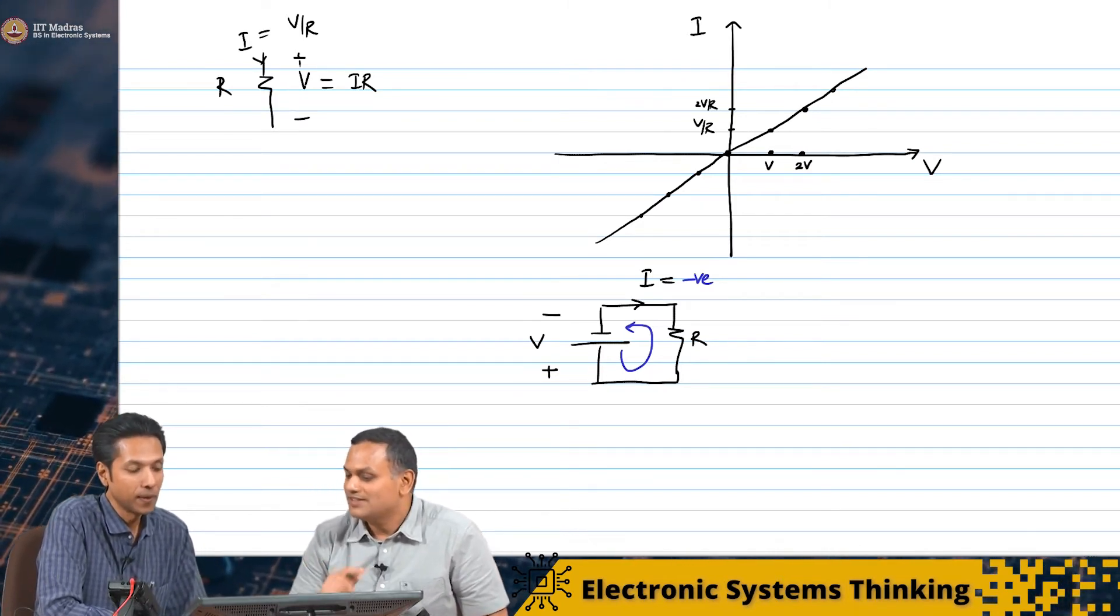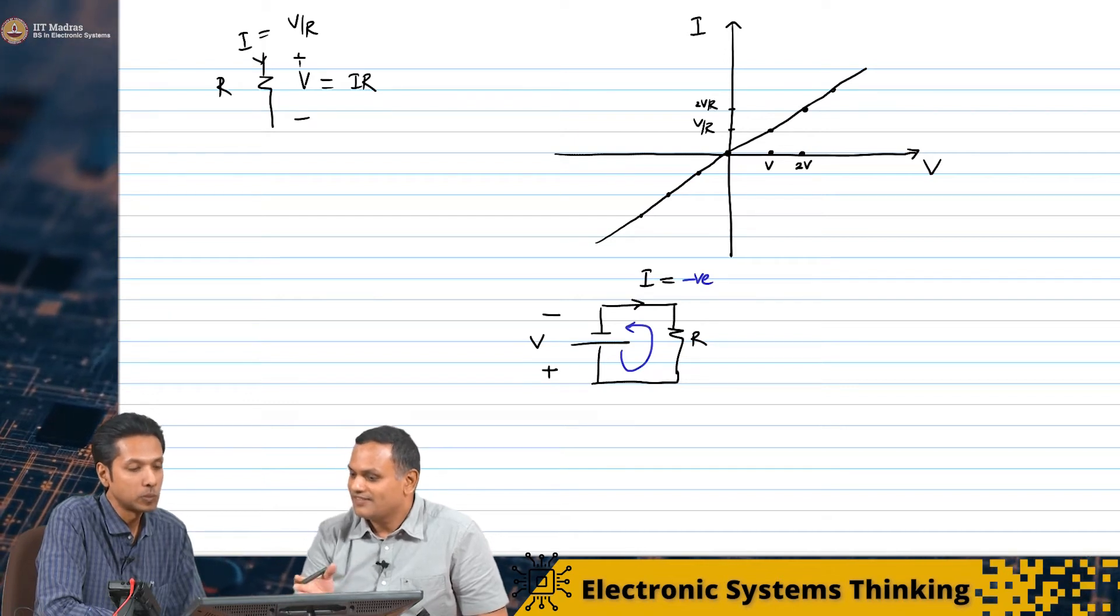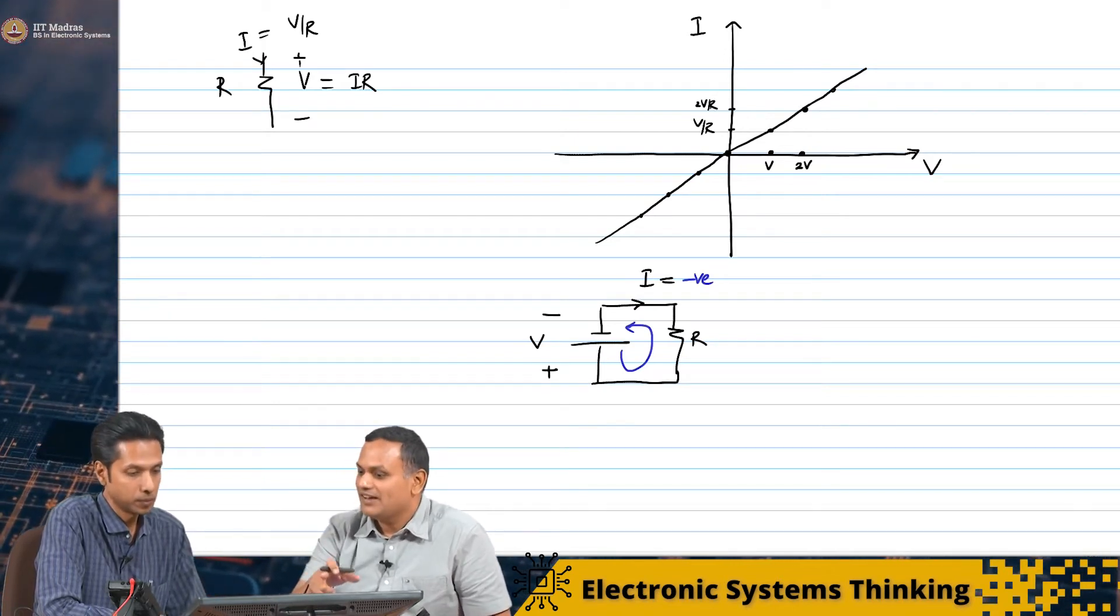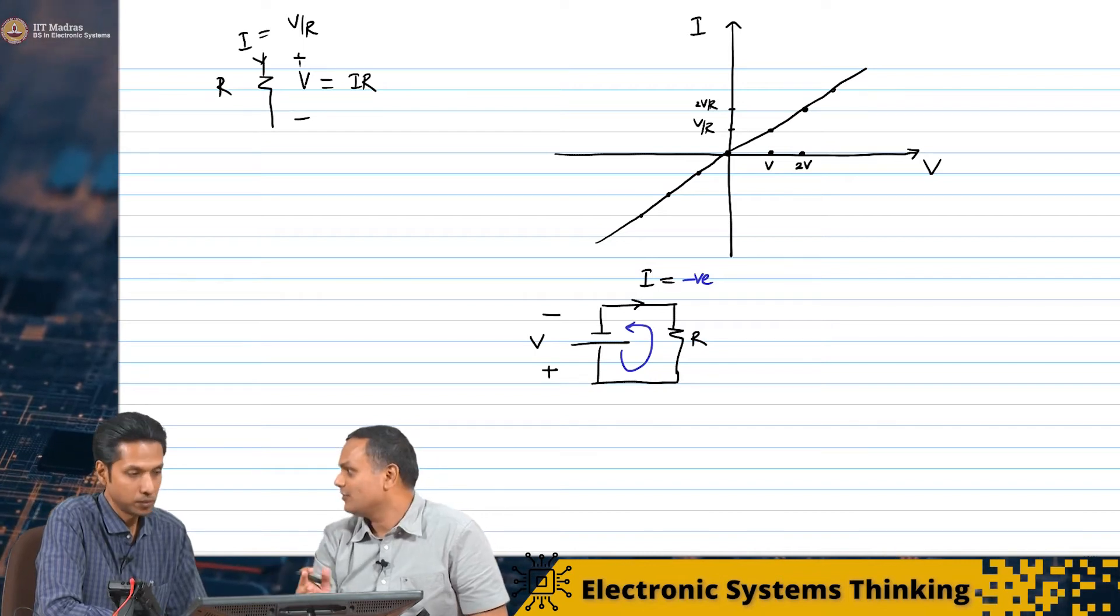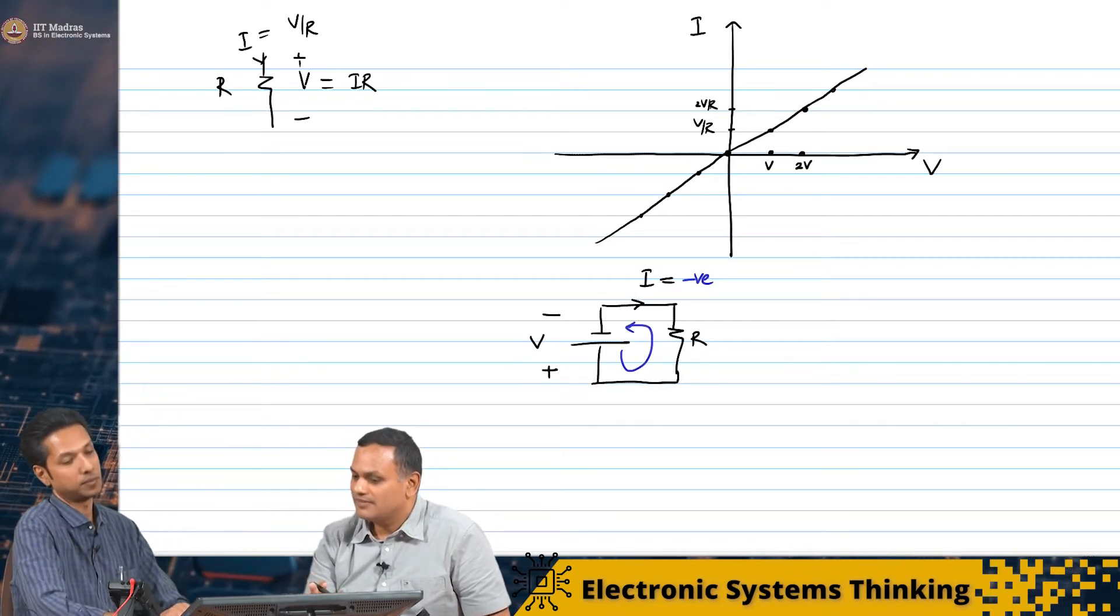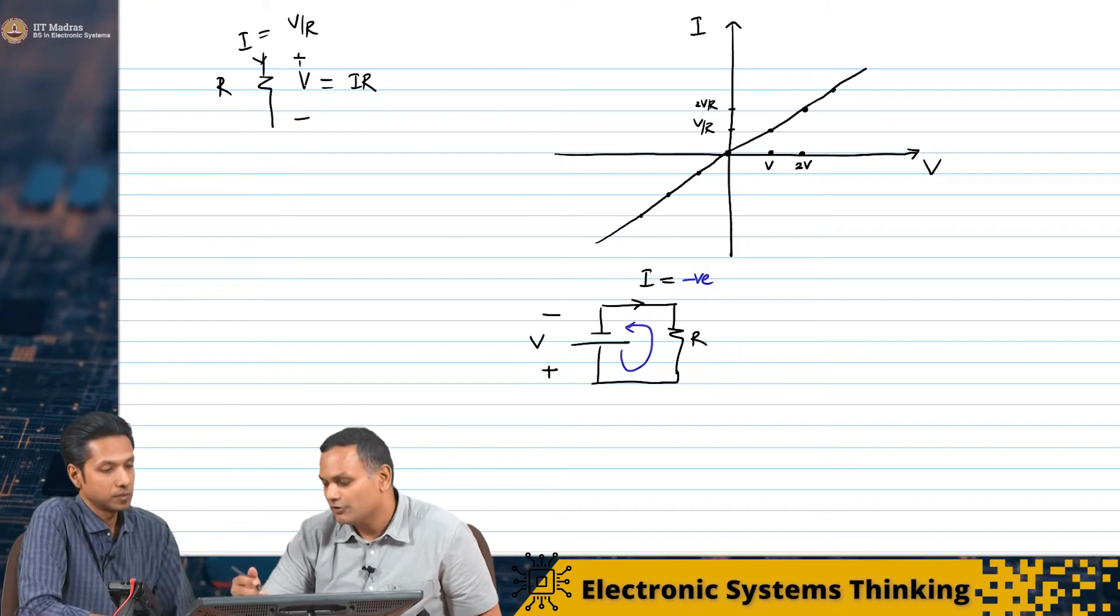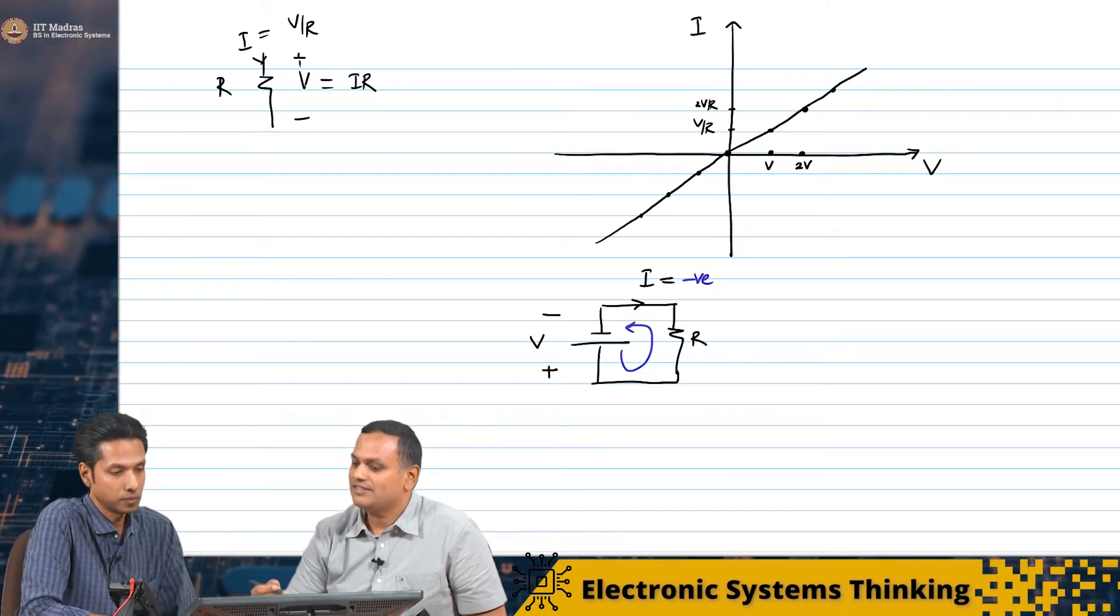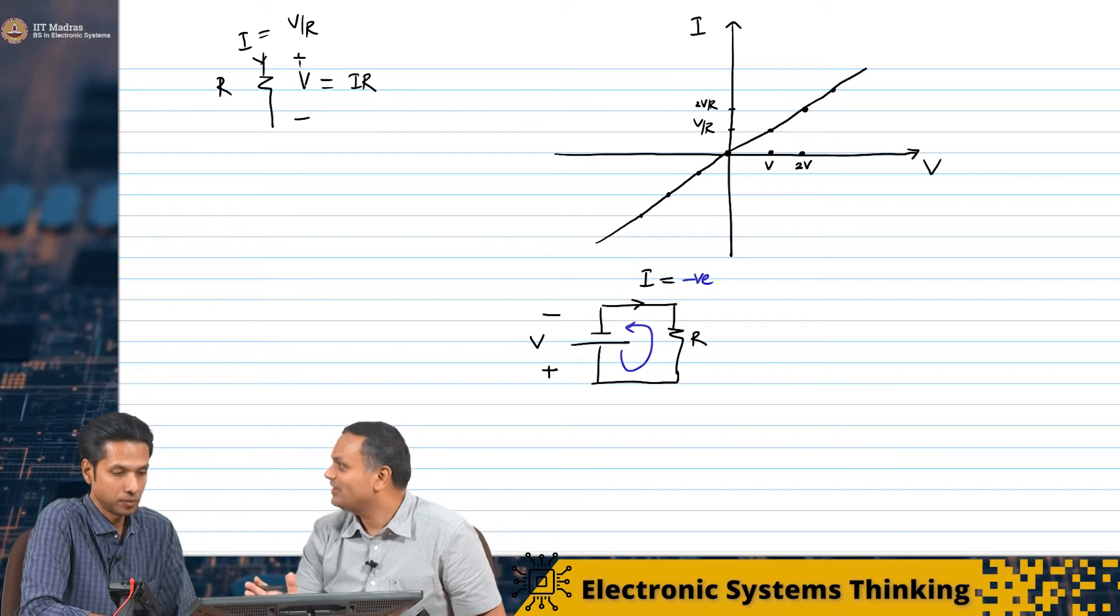Now, this straight line passing through the origin is the IV or VI characteristic of a resistor. If you plot the other way, you can also plot voltage versus current, in which case the slope of the line will be the resistance.